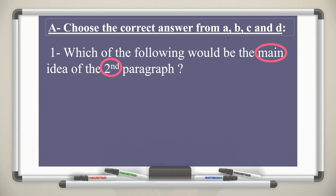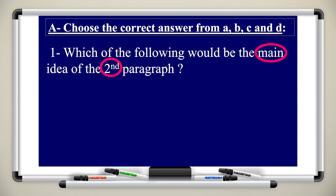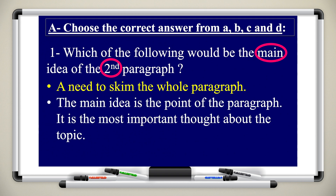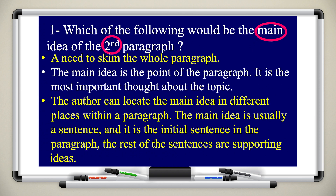Always read the questions before reading the passage. Number one in the multiple choice questions: which of the following would be the main idea of the second paragraph? For this question, you need to skim the paragraph, meaning to look over it very quickly. The main idea is the point of the paragraph — the most important part. The author can locate the main idea in different places, but it is usually the initial sentence of the paragraph.